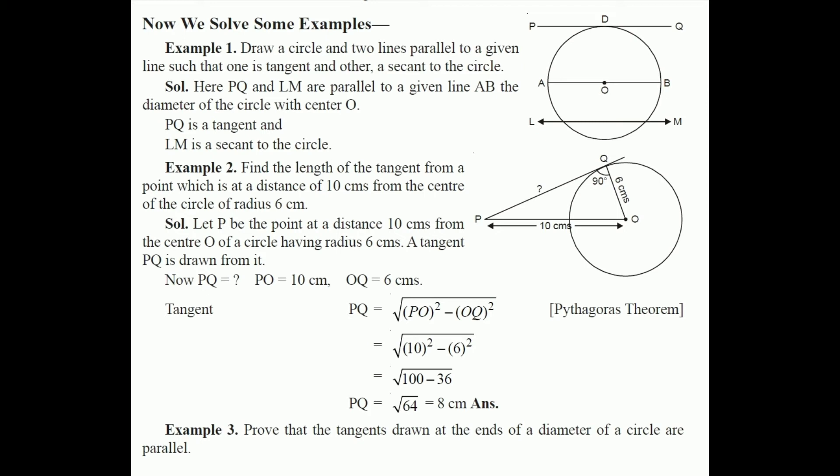Example 2: Find the length of the tangent from a point that is at a distance of 10 cm from the center of a circle of radius 6 cm. We take the circle with center O. OP is the line joining external point P to center O, which is 10 cm. OQ is the radius equal to 6 cm. PQ is the tangent line whose length we have to find.